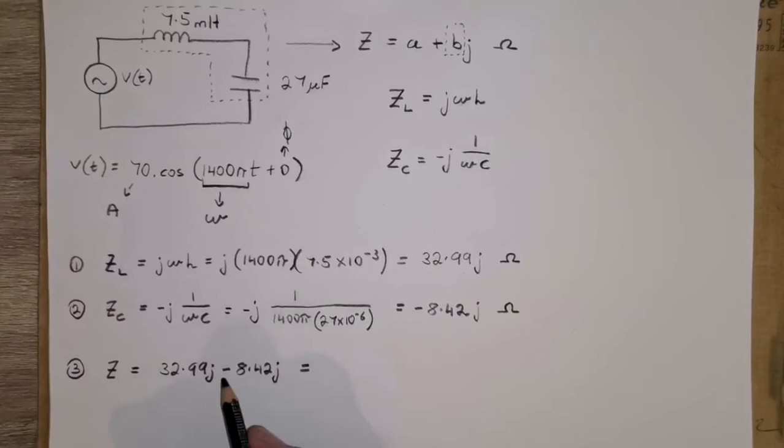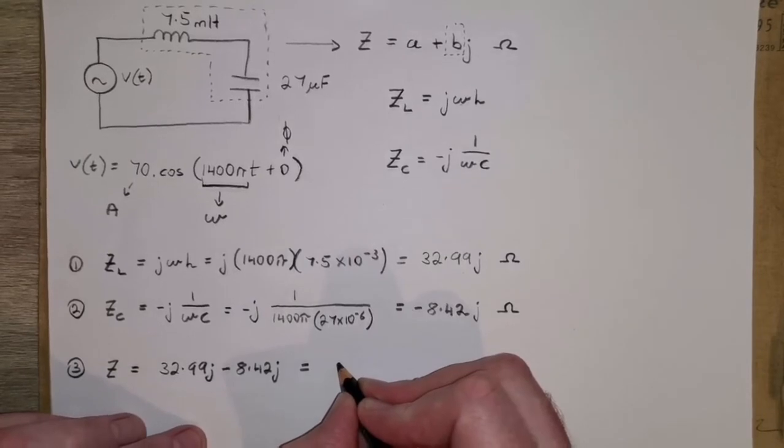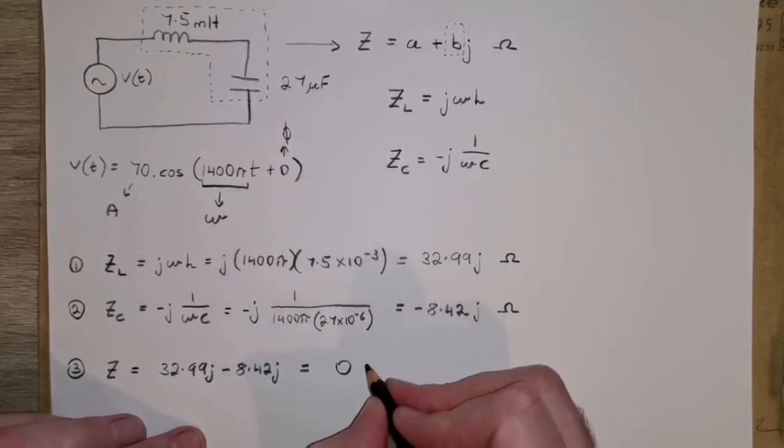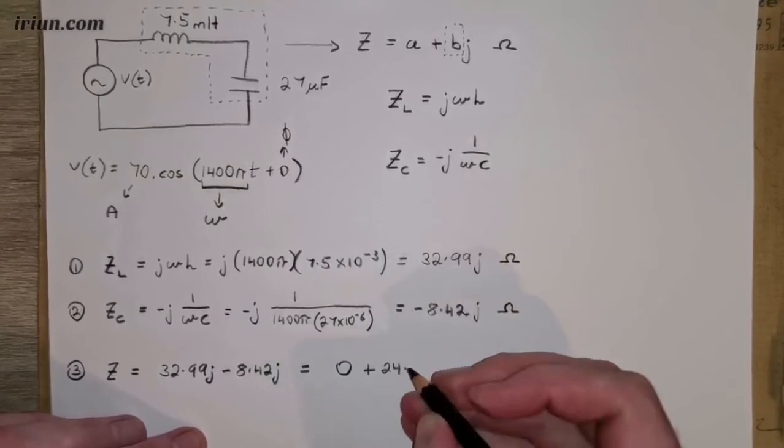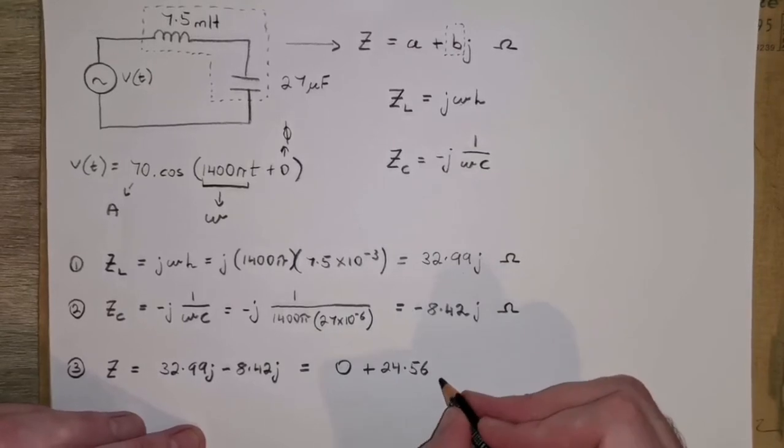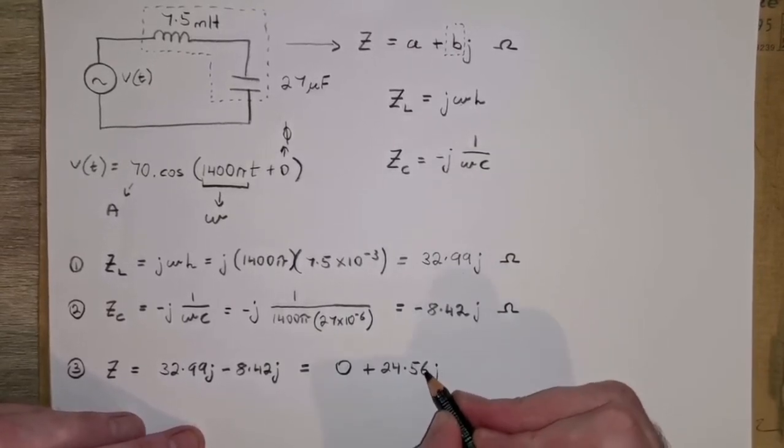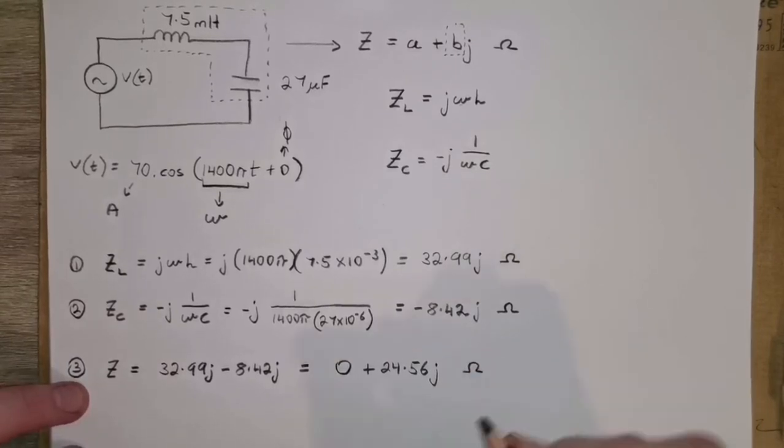And it's real with real, imaginary with imaginary. So the result I'm getting here is zero for the real part, plus 24.56j. You could round that up to 24.57, but it's not going to make that much of a difference. So this is the total impedance.